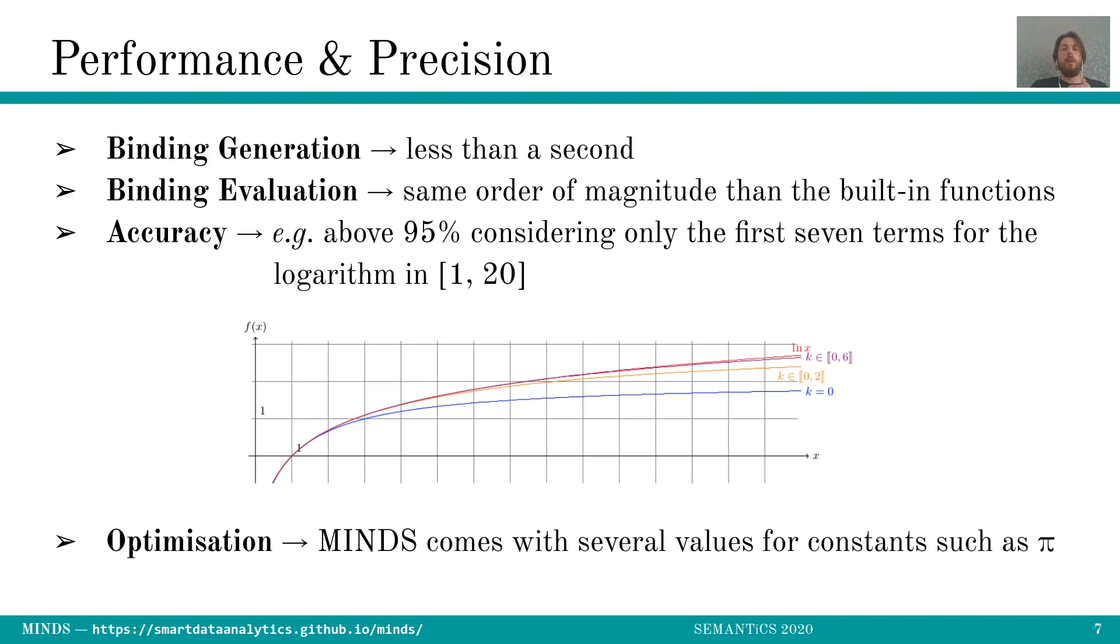And in terms of optimizations, MINDS comes with a set of already known constants such as pi or exponential. And in addition, it's also taking advantage of the periodicity of the trigonometric functions, for instance, to reduce the variable of the function.